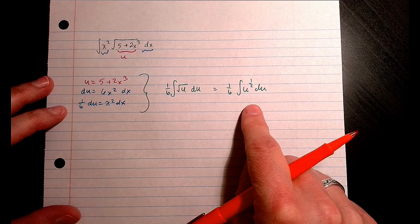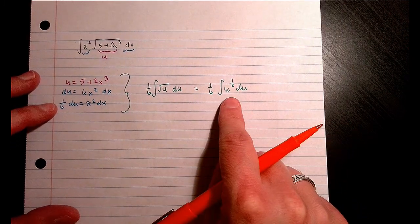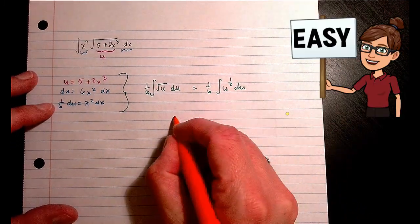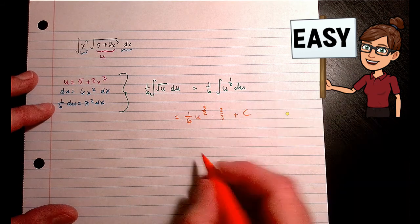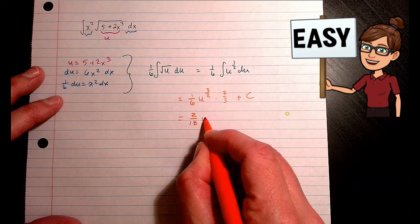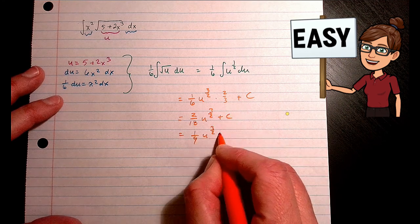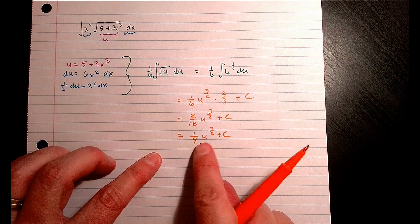Now I'm ready to do my antiderivative. Now this is going to be reverse power rule. So at this point, once you're in terms of u, you're going to put your substitution of u back in so your function goes back in terms of x.